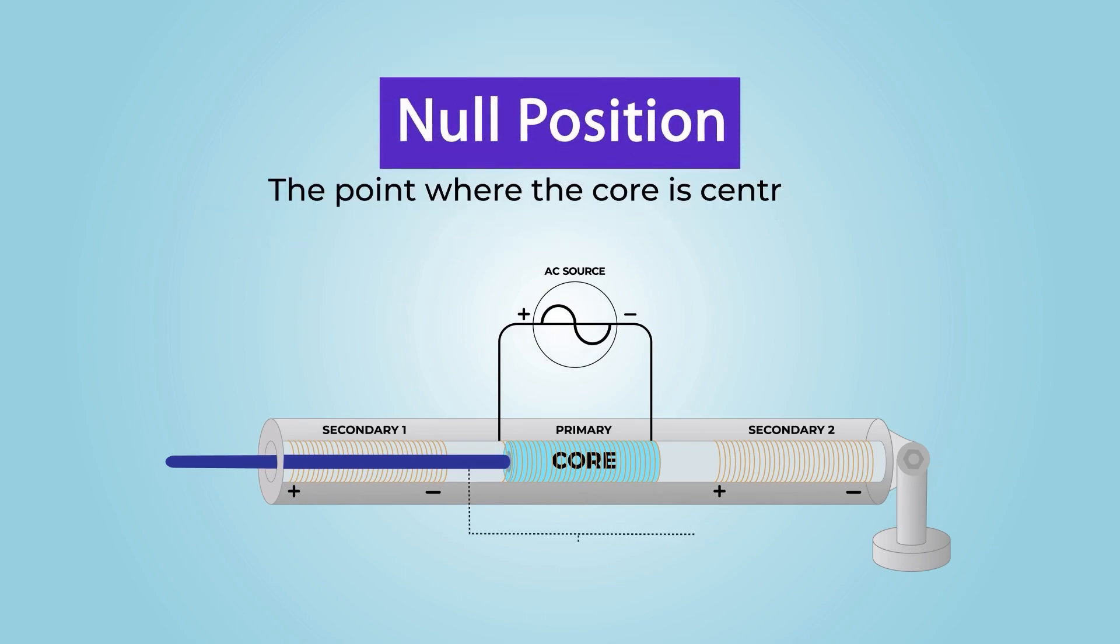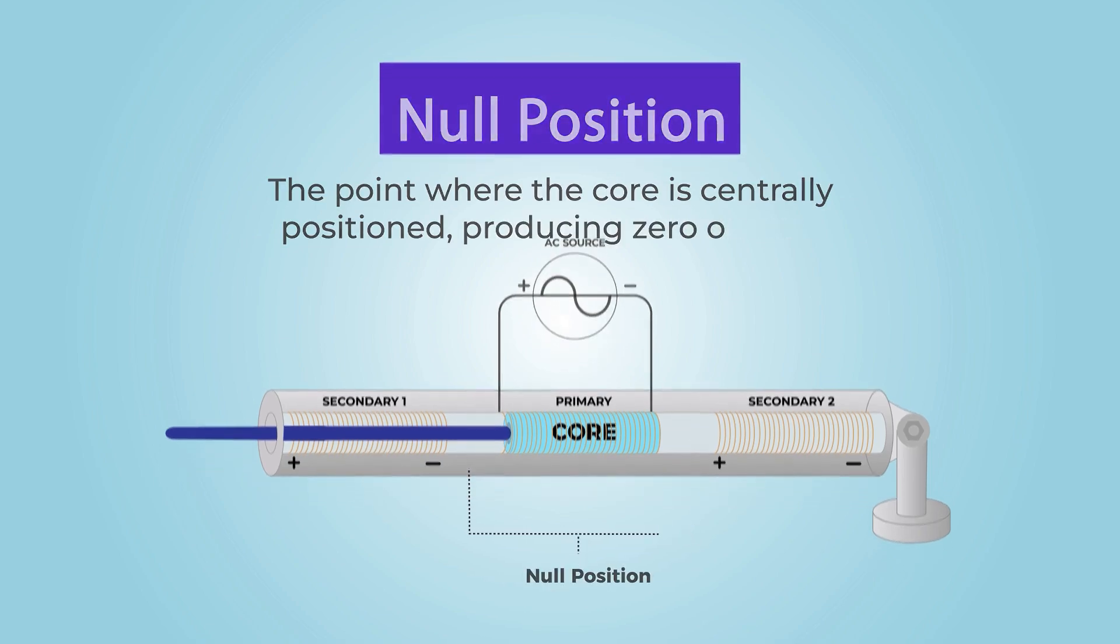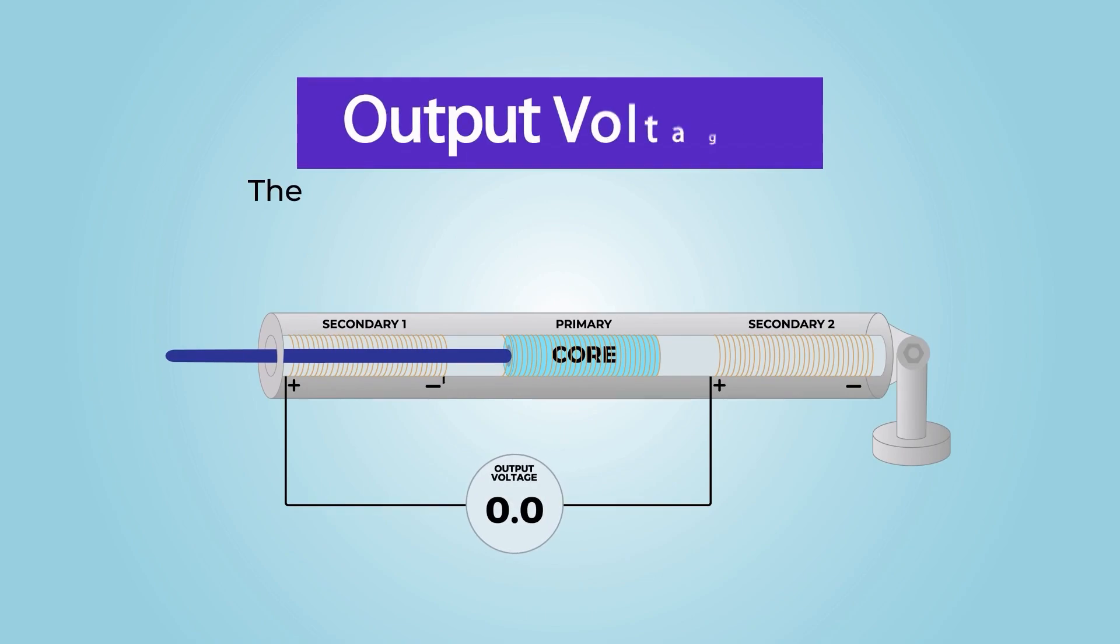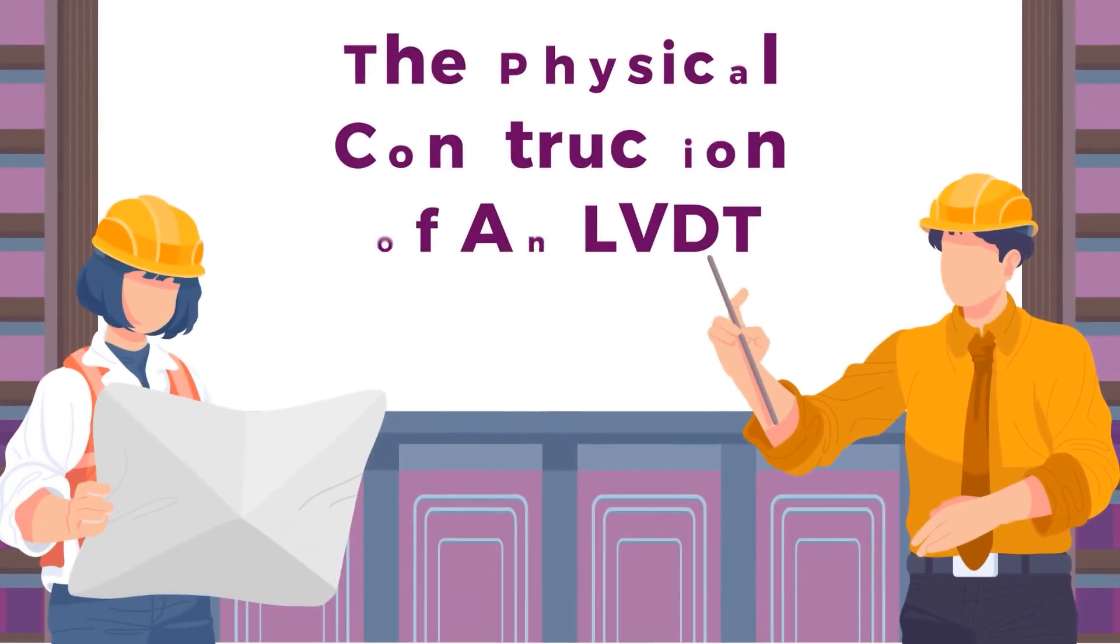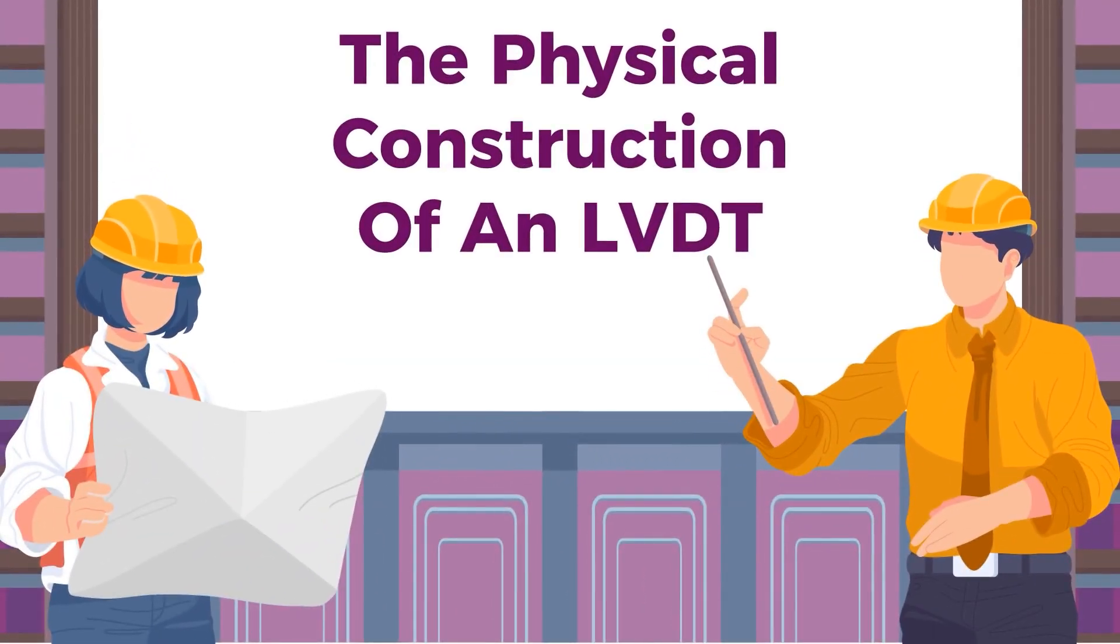The null position is the point where the core is centrally positioned producing zero output. The output voltage is the electrical signal generated as the core moves, indicating changes in position. Now that we understand the terms, let's dive into the physical construction of an LVDT.